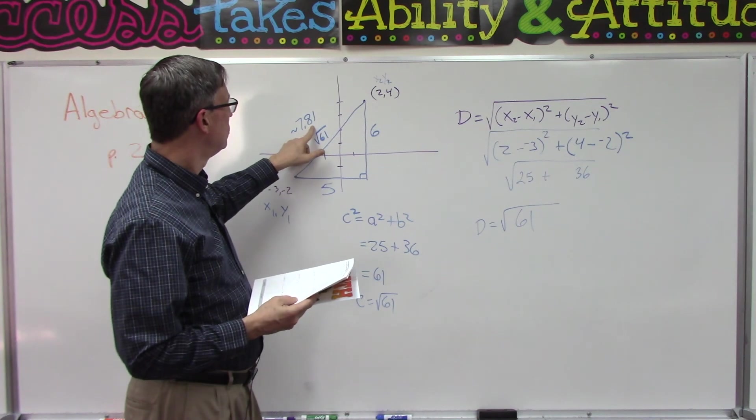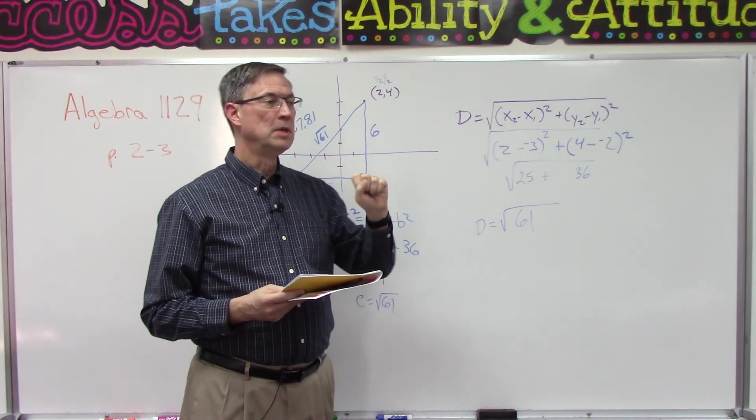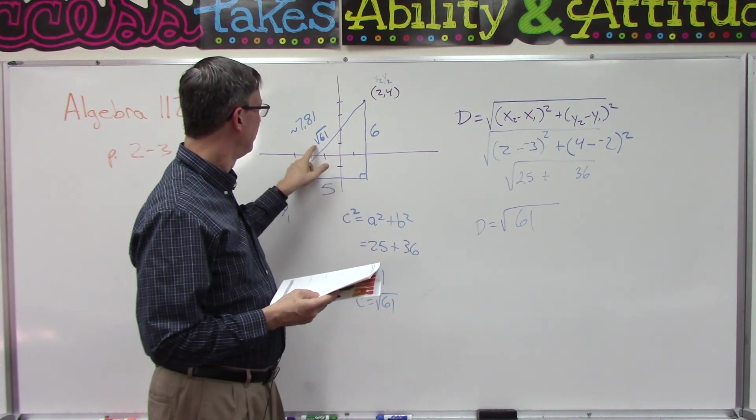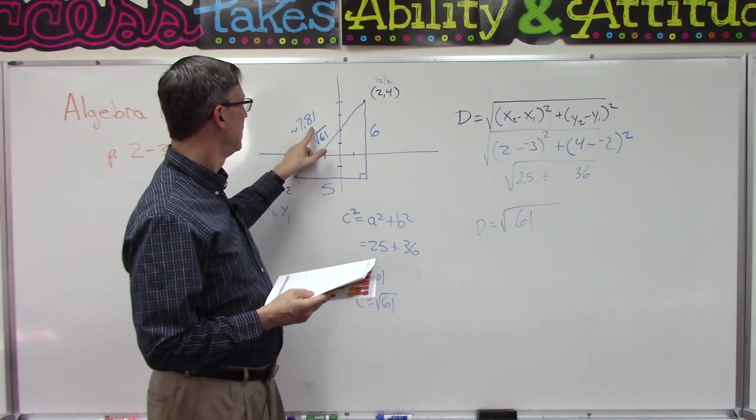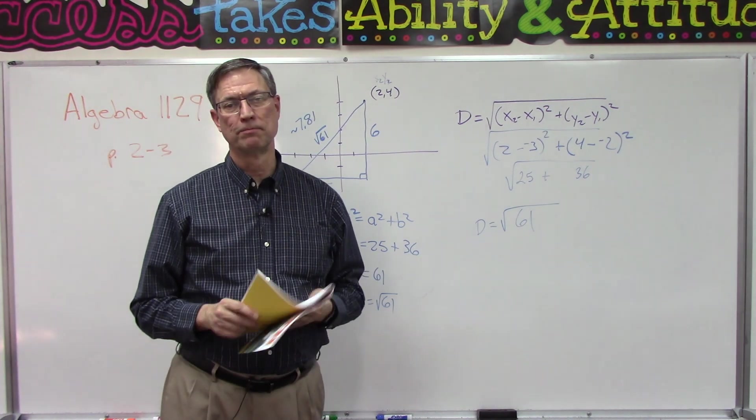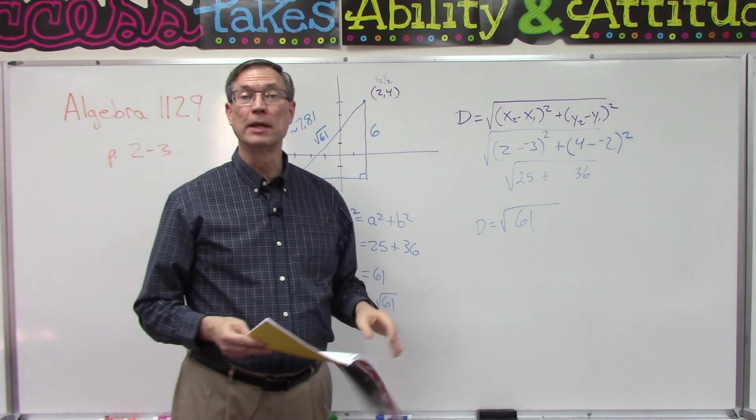Let's see, it says leave radical answers in simplest form, then give the approximate answers to two decimal places. So they want you to give two answers: first the square root answer simplified, and then secondly use your calculator and carry it out to two decimal places. Have fun with that, and we'll come back and talk about circles next.